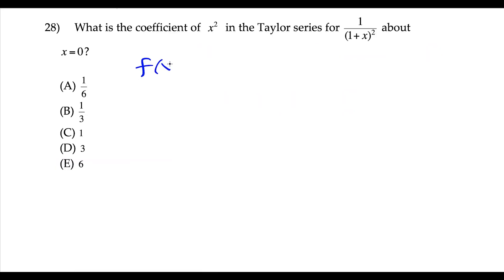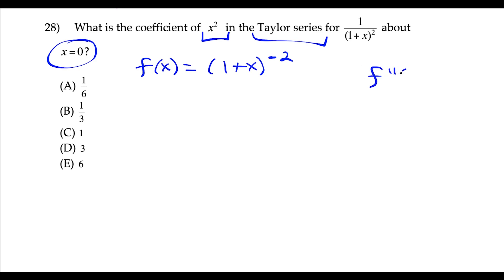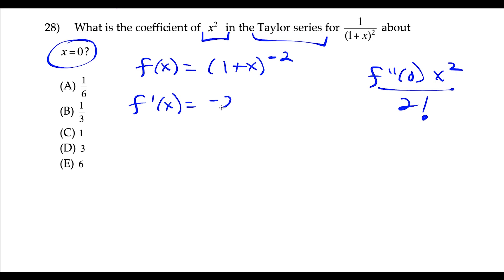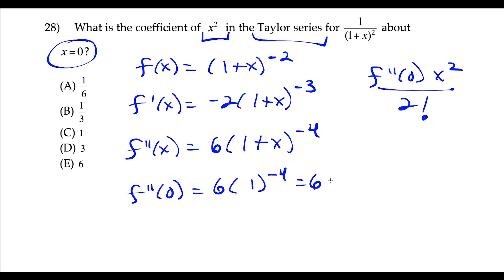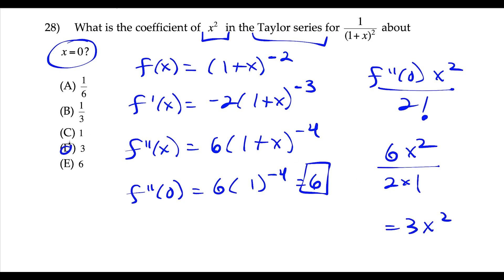Question 28: rewrite the function as (1 plus x) to the negative 2. The coefficient of x squared in the Taylor series centered at zero is f-double-prime(0) over 2 factorial. Taking derivatives: f-prime(x) equals negative 2(1+x) to the negative 3; f-double-prime(x) equals 6(1+x) to the negative 4. Plugging in zero: f-double-prime(0) equals 6. The coefficient is 6 over 2 factorial equals 3 — choice D.